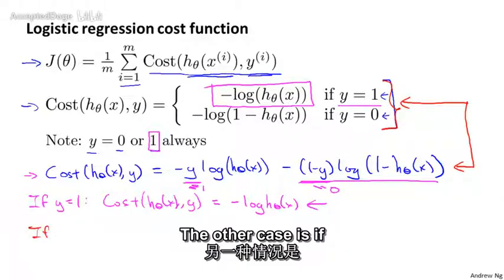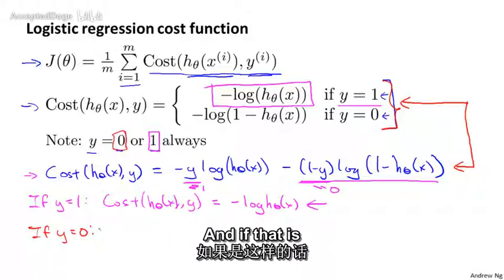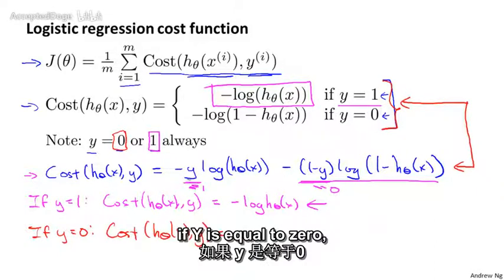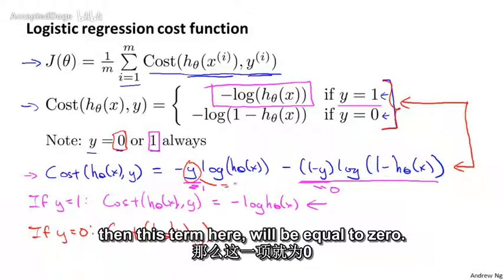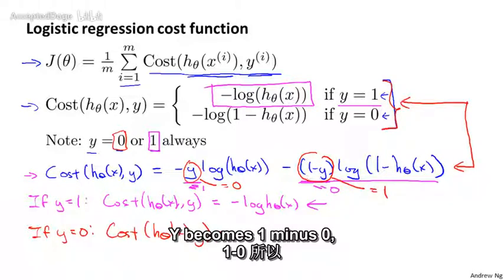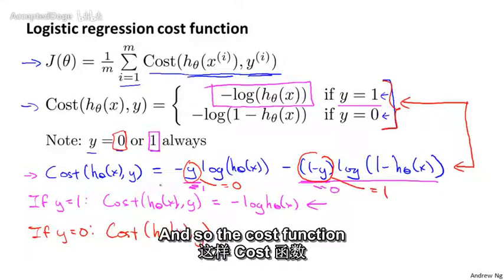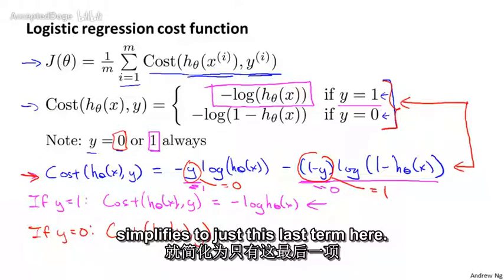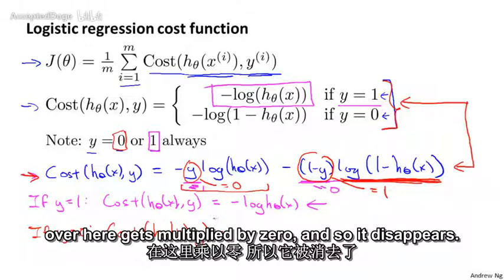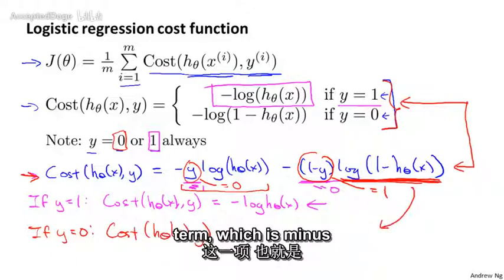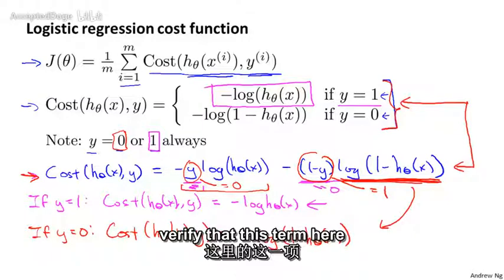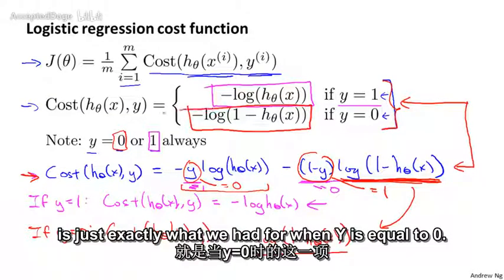The other case is if y is equal to 0. And if that's the case, then our writing of the cost function is saying that if y is equal to 0, then this term here would be equal to 0. Whereas 1 minus y, if y is equal to 0, would be equal to 1, because 1 minus y becomes 1 minus 0, which is just equal to 1. And so the cost function simplifies to just this last term, because the first term gets multiplied by 0 and so disappears. So we're just left with this last term, which is minus log (1 - h(x)). And you can verify that this term here is just exactly what we had for when y is equal to 0.